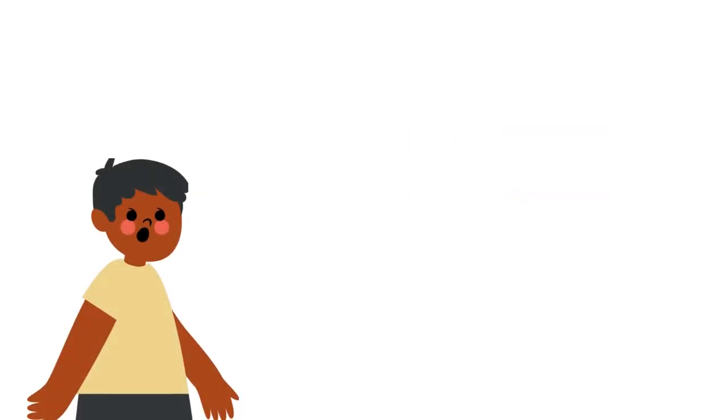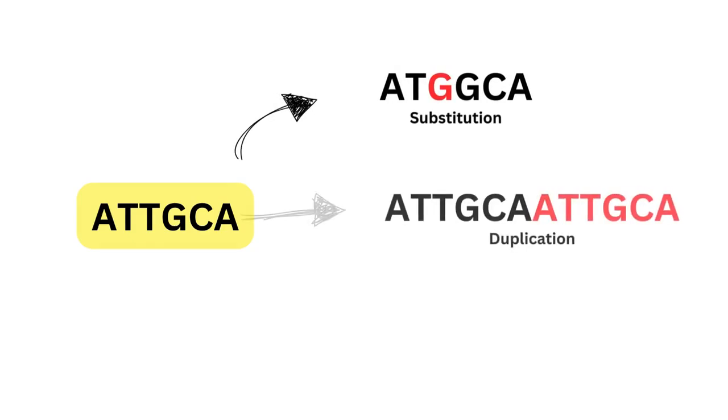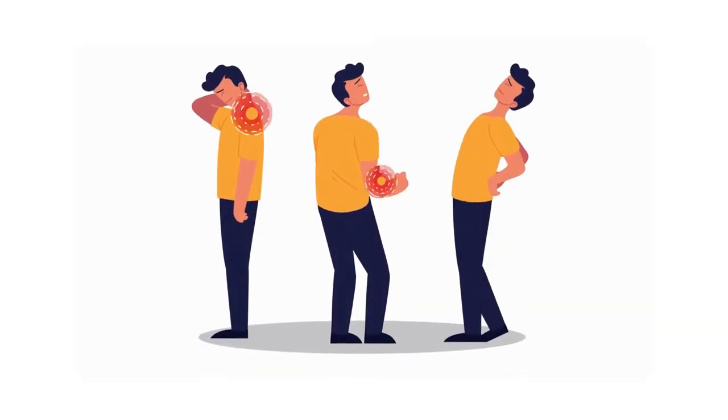One major thing about our genes is that they are less permanent than you may think. Our genes are actually extremely susceptible to changes, such as substitutions of nucleotides, duplications of whole genes, or even deletions of entire regions of our DNA. These changes in our genome can affect the way we physically appear, or the likelihood of us developing diseases.